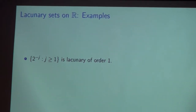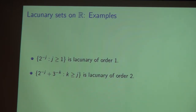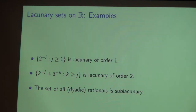Some quick examples: the geometric sequence 2^{−j} is lacunary of order 1 with lacunarity constant one half. Building up further, if each point of a lacunary sequence is the limit point of other lacunary sequences, you get something lacunary of order 2 — for instance, 2^{−j} + 3^{−k} is a prototypical example. On the other hand, the sequence 1/j is obviously not lacunary, and the collection of all dyadic rationals is definitely sub-lacunary.